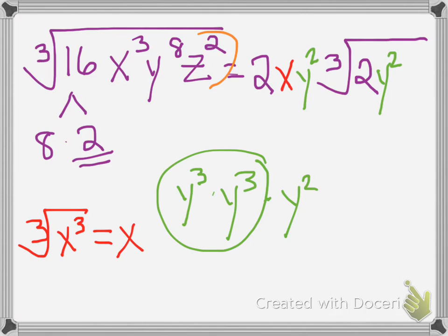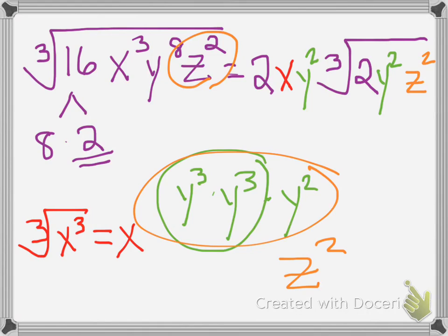And the last one is z to the 2nd. How can I make z to the 2nd a set of z to the 3rd? Well, I can't. It doesn't even have enough to do what we did with the y and the x's. It has to at least be the same value. If you're taking the cube root of something, you at least need to have a power of 3 or higher to take something out. So, that z to the 2nd stays underneath the radical, and this is our final answer.